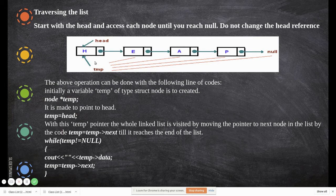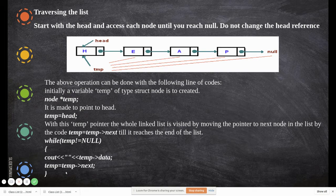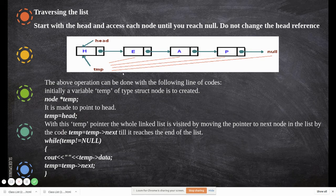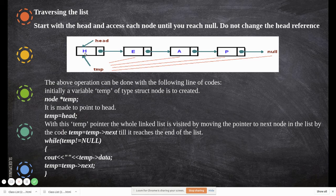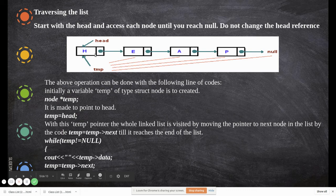While temp is not equal to null, it holds a valid memory location pointing to a node. In the loop, we print the value — for example H — then move the temp pointer to the next node by assigning temp = temp->next. We can access the two fields of a node as temp->data for the data field and temp->next for the pointer field.